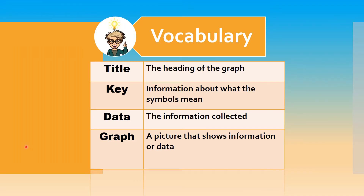Let's focus on our graph vocabulary. The title is the heading of the graph. The key is the information about what the symbols on the graph mean. The data is the information collected. And the graph is the picture that shows information or data.